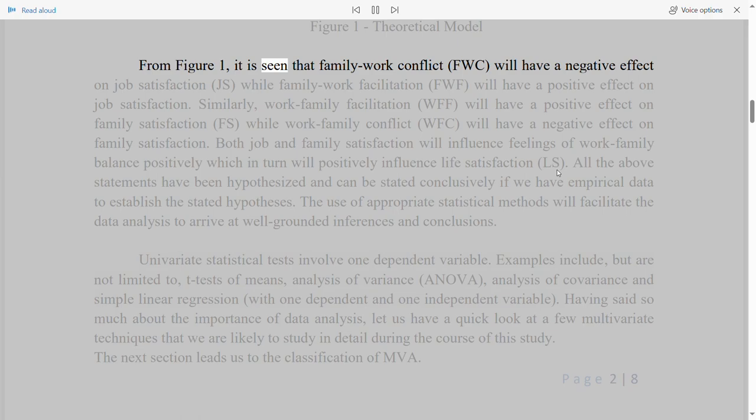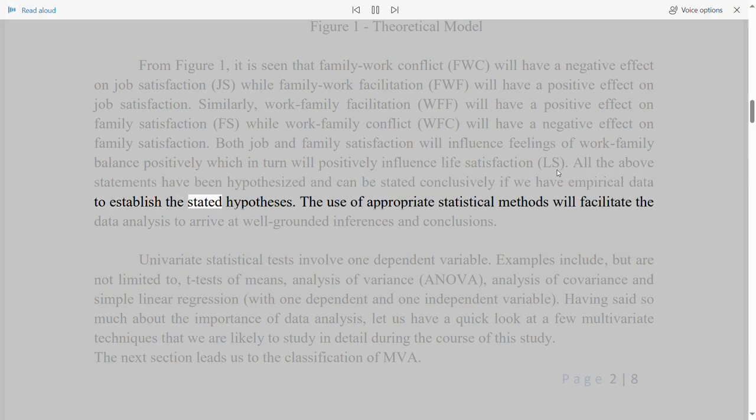Figure 1 Theoretical Model. From Figure 1, it is seen that family work conflict, FWC, will have a negative effect on job satisfaction, JS. While Family Work Facilitation, FWF, will have a positive effect on job satisfaction. WFF will have a positive effect on family satisfaction, FS. While Work Family Conflict, WFC, will have a negative effect on family satisfaction. Both job and family satisfaction will influence feelings of work-family balance positively, which in turn will positively influence life satisfaction, LS. All the above statements have been hypothesized and can be stated conclusively if we have empirical data to establish the stated hypotheses. The use of appropriate statistical methods will facilitate the data analysis to arrive at well-grounded inferences and conclusions.